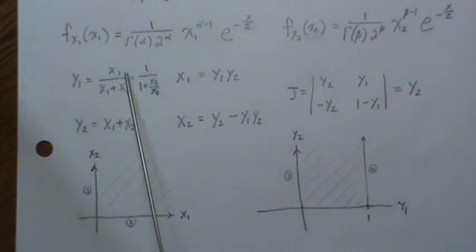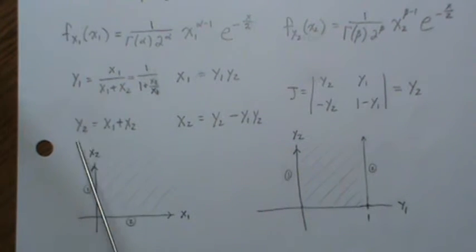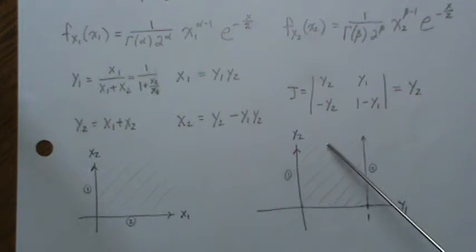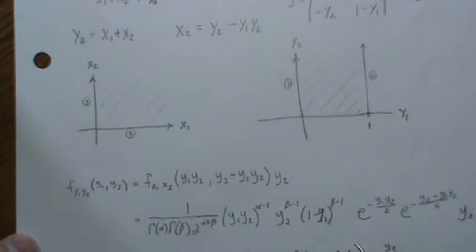But because we're only dealing with positive values here, each of these have to be greater than zero. So that's this boundary here. Y2 has to be greater than zero.